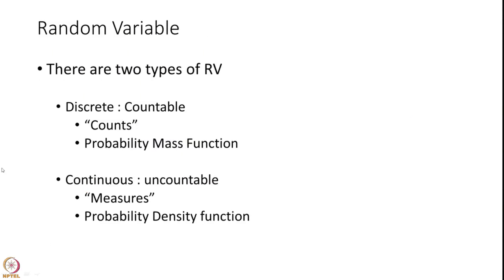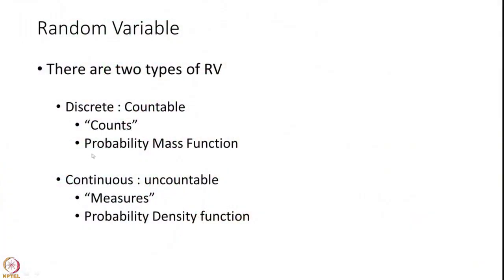There are two types of random variables: one is countable (discrete) and the other is uncountable or continuous. Consider an experiment in which you count the number of defective outcomes from a processing unit — these are numbers like two defectives, three defectives, five defectives, and so on. These are countable, and with a countable discrete random variable a probability mass function is attached. Continuous random variables, like yield strength, measure a certain quantity and have a probability density function attached.